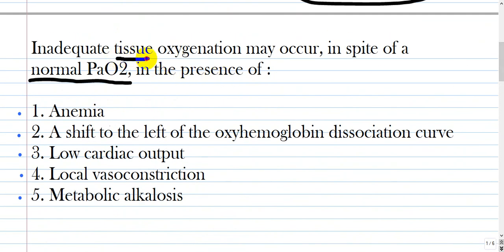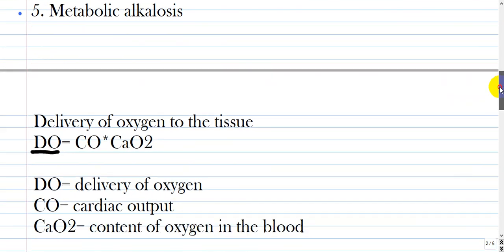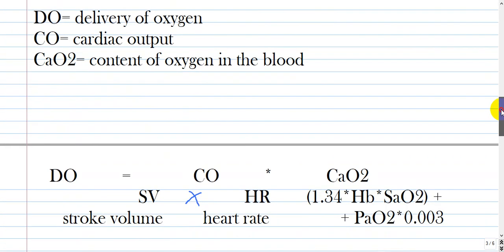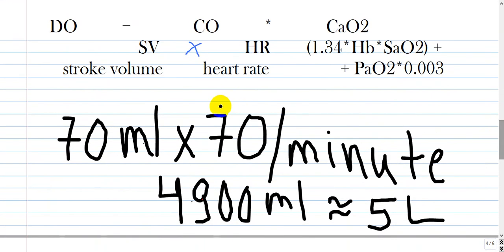Tissue oxygenation is dependent on many factors. Let's discuss every part. Delivery of oxygen to the tissue has the following formula: cardiac output times CaO2, or cardiac output times content or concentration of oxygen in the blood. This formula can be expanded in the following way.